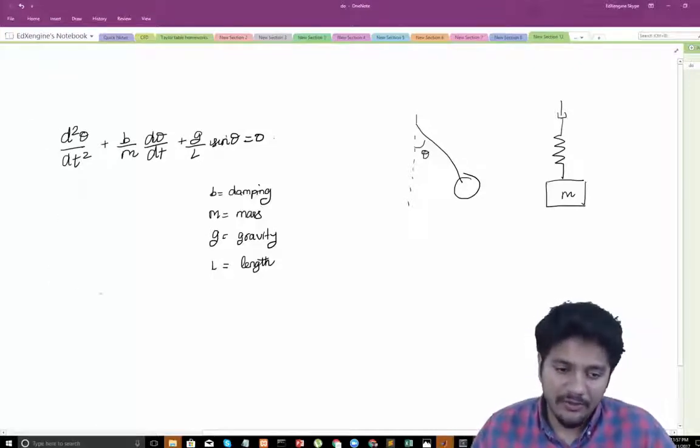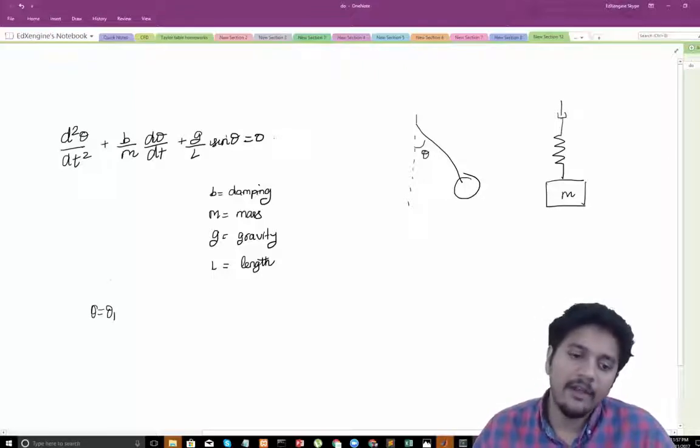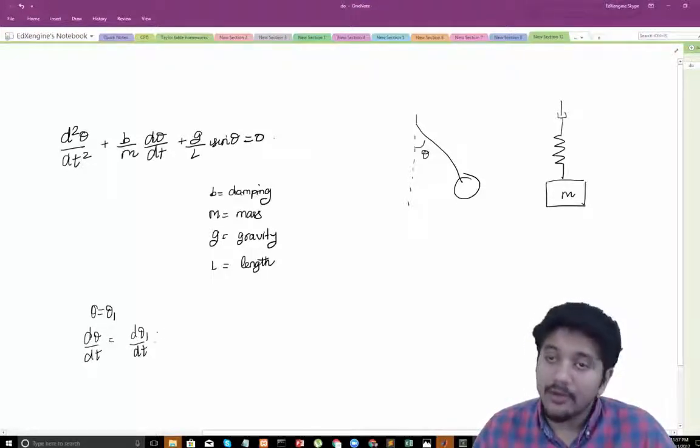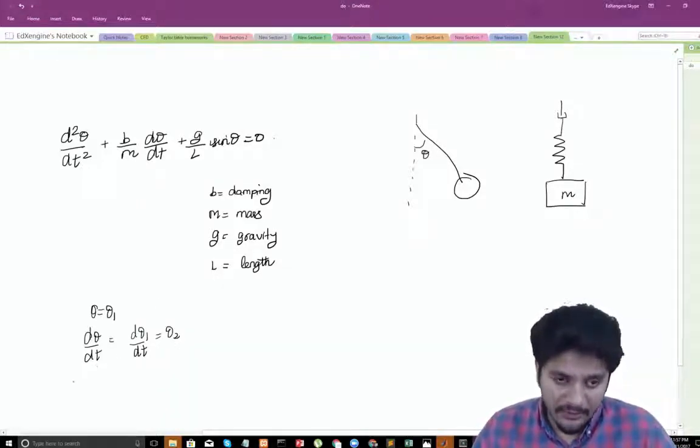Alright, so what I'm going to do is I'm just going to say that theta is equal to theta 1. If theta equal to theta 1 then d theta by dt is nothing but d theta 1 by dt and I'm going to introduce a new variable called theta 2.